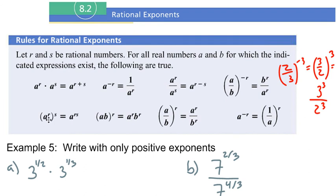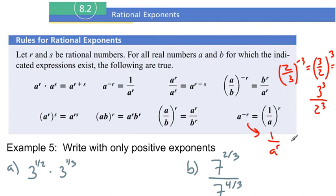If I have a single variable a raised to the power of r and I raise that all to the power of s, we keep our a but we're multiplying r and s. And if I have a·b as my base raised to the power of r, I raise a to the power of r and b to the power of r — basically everything inside the parentheses gets raised to the power of r. Similarly, if I have a over b raised to the power of r, everything gets raised to the power of r: a to the r over b to the r. And last but not least, if I have a to the power of negative r, we can write this as one over a to the r.